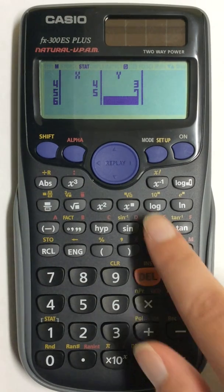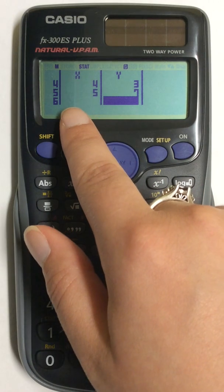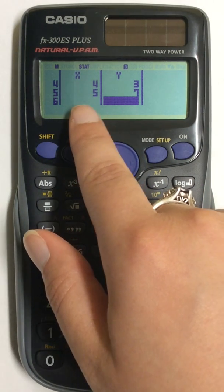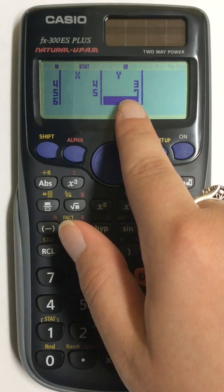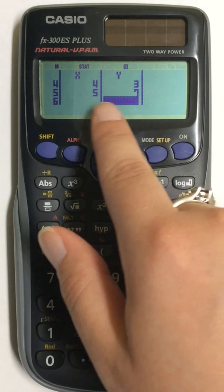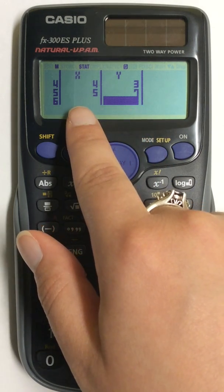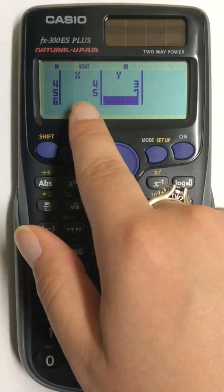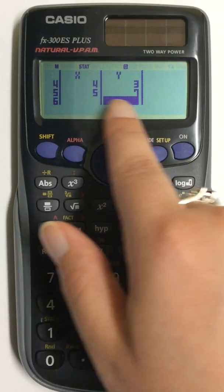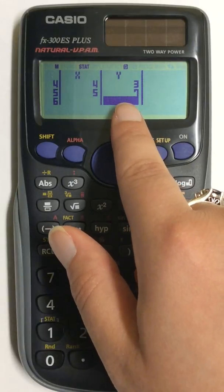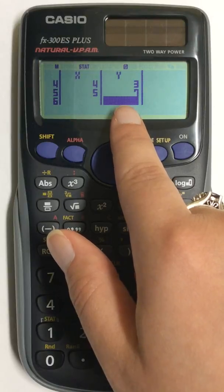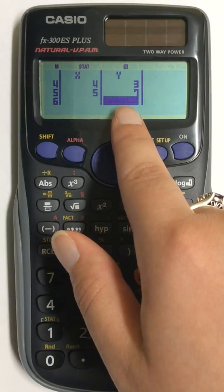Make sure that when you're plugging in your sets of numbers, they match at the bottom. You can't calculate anything if you have an extra X or an extra Y. Your calculator will not be able to calculate anything correctly.